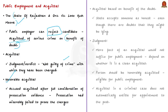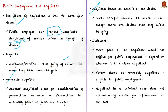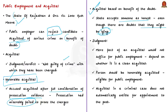Honorable acquittal is when the prosecution has miserably failed to prove the charges leveled against the accused after full consideration of prosecution evidence. Acquittal by benefit of doubt is when the state accepts someone as honest or deserving of trust even though there are doubts they might be lying. In criminal cases, guilt must be proved beyond any reasonable doubt — if there is even the slightest doubt, the benefit goes to the accused person.